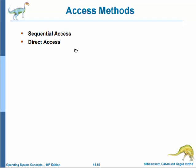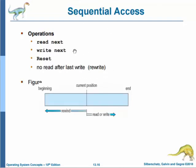Files store information, and when a file is used, this information must be accessed and read into computer memory. The information in a file can be accessed in several ways. Some systems provide only one access method; others, such as mainframe operating systems, support many. The simplest access method is sequential access and the other is direct access. For sequential access, information in the file is processed in order, one record after another. This mode is by far the most common — editors and compilers usually access files in this fashion.